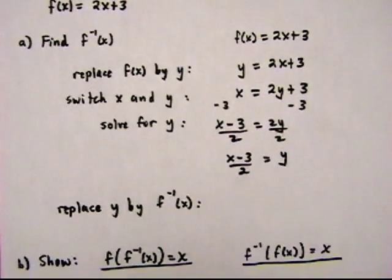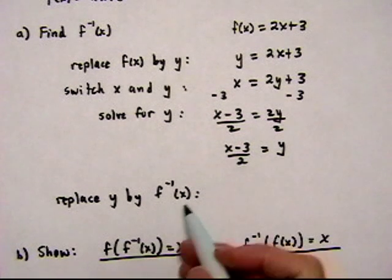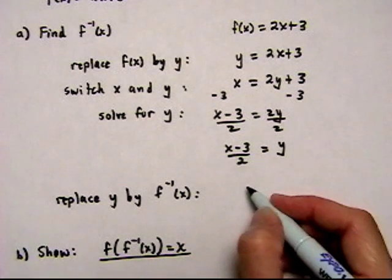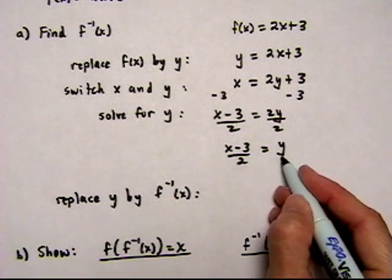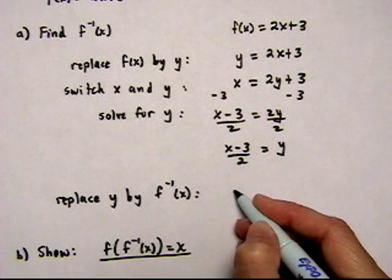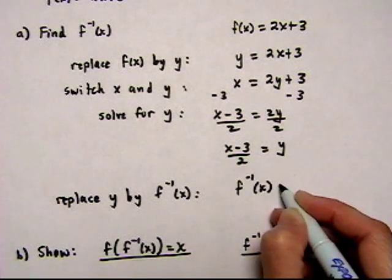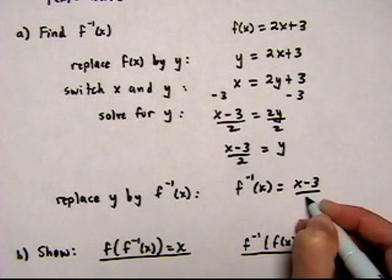And the last step for getting the inverse is now just replace this y by the inverse notation, f negative 1, or f inverse. And I'm going to write it on the left side instead of on the right side here. So f inverse of x is equal to x minus 3 over 2.